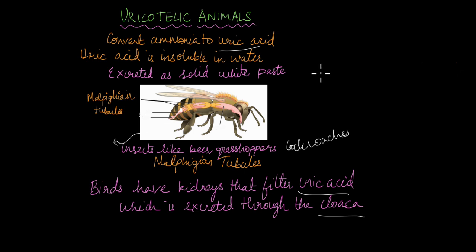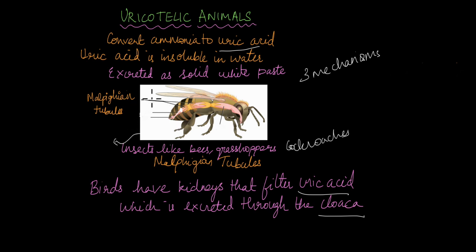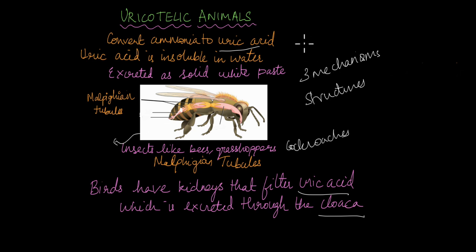Now that we've talked about the different types of excretory products and mechanisms, here's a question: do you think these organisms evolved three mechanisms — ammonotelic, ureotelic, and uricotelic — because of different structures inside their body, like Malpighian tubules or nephridia? Or did those structures evolve because of the different types of waste products — ammonia, uric acid, and urea — produced by these organisms? Think about that.